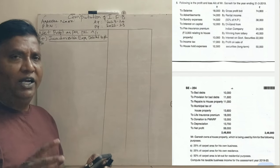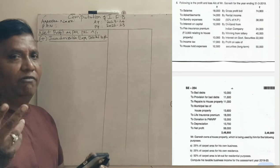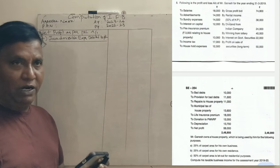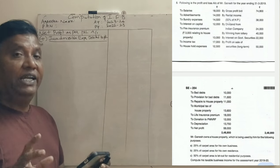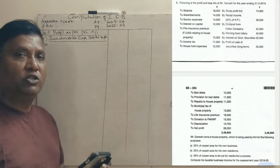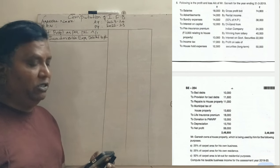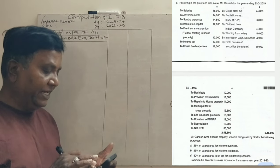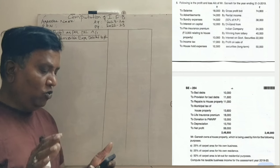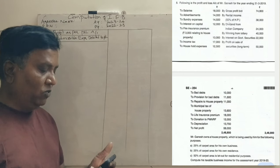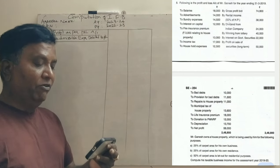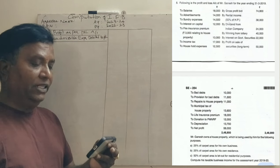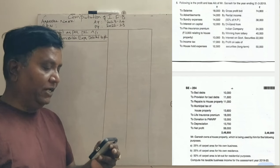We have already published the 20-20 question paper. We have a question for 12 marks. The question is: the following is the profit and loss account of Mr. Ganesh for the year ending 31st of March 2019.